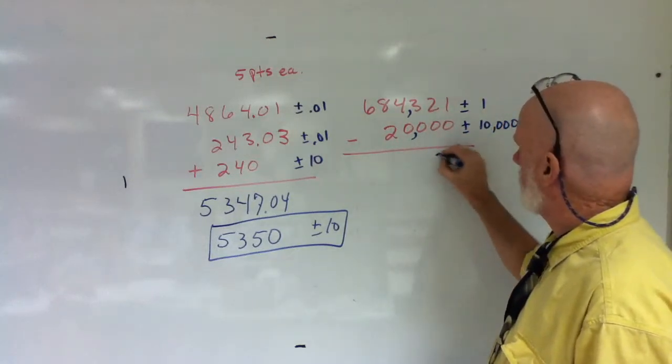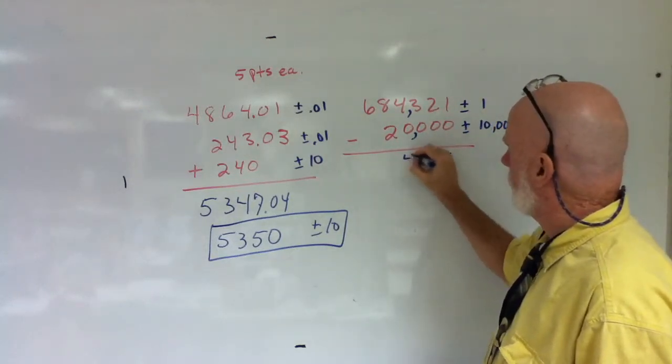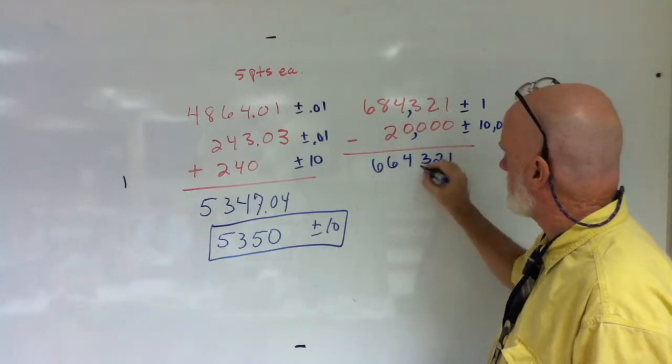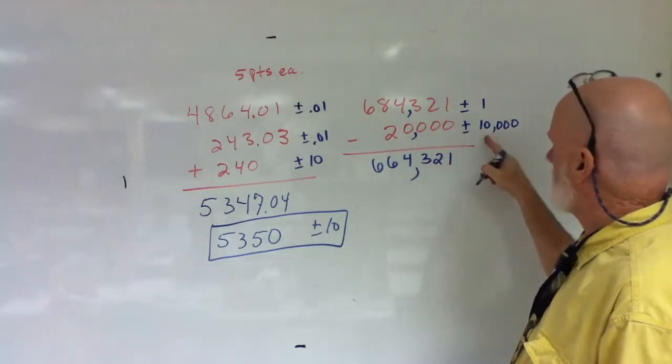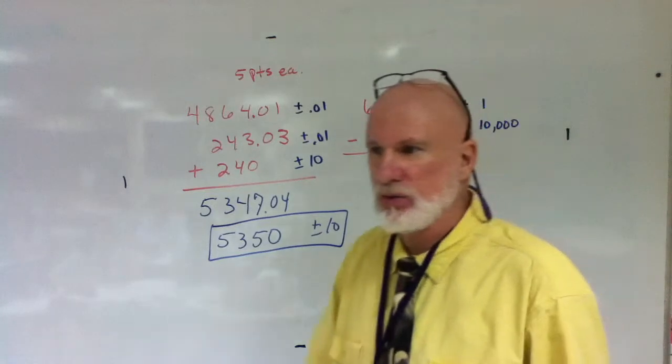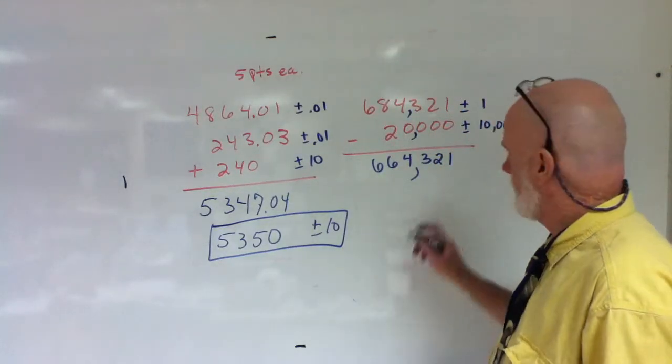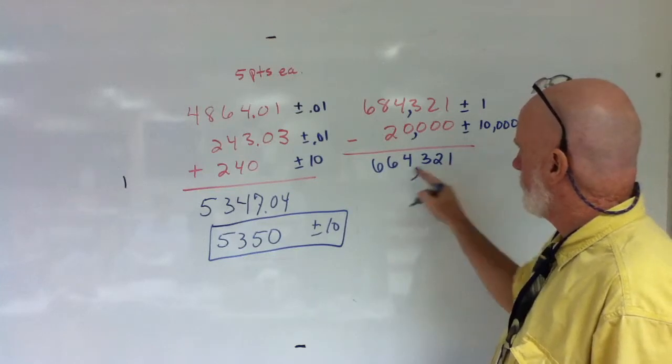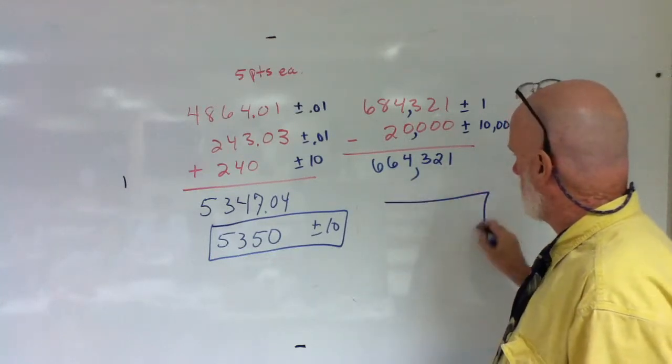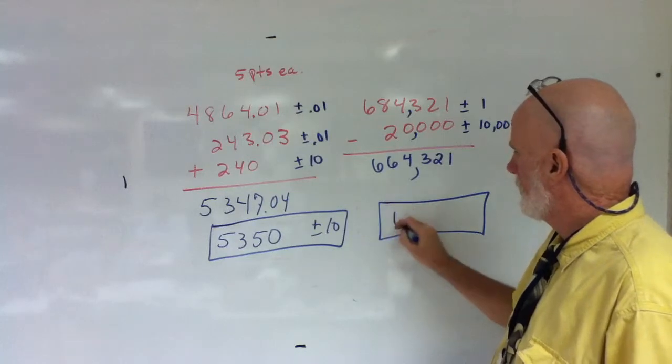This one is a little bit weird. One, two, three, four, six, six. But my precision must be to ten thousands, right? Yep. Okay, so it's got to be to here.